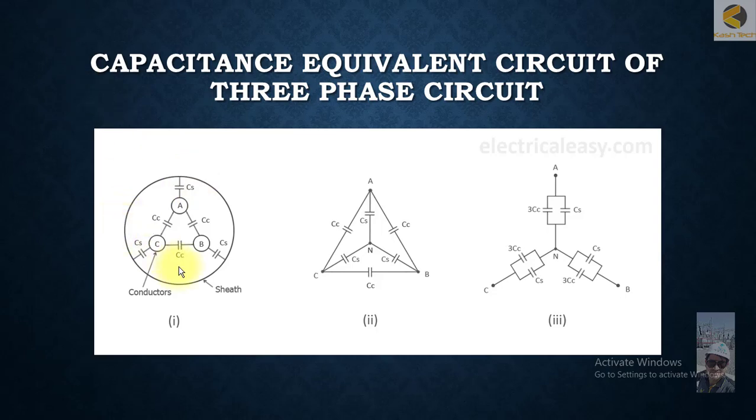Because mostly the circuits are three-phase: phase A, phase B, and phase C - these are basically three conductors, three cables. There will be capacitance between conductor A and conductor B, conductor B and conductor C, and then conductor C and conductor A. Also, this is the sheath of the cable, which is also a conductor.